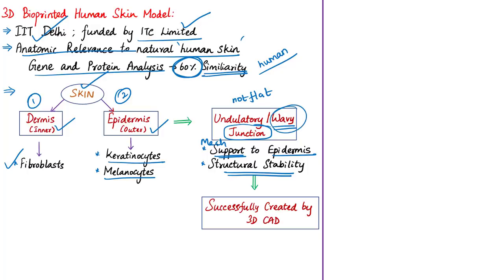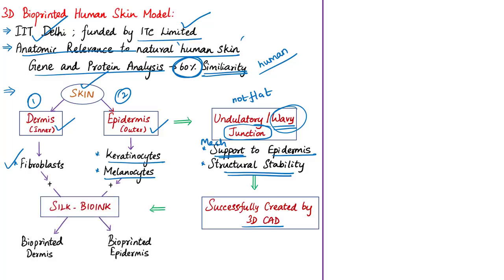The undulatory junction was designed using 3D CAD, and 10 layers of dermis were constructed through bioprinting followed by 8 layers of epidermis. Silk bioink was mixed with the respective cells for growing dermis and epidermis. The bioprinted skin retained its original dimension without any shrinkage for up to 3 weeks. Traditionally, collagen used for developing skin constructs starts shrinking within a few weeks, meaning testing on such collagen skin constructs cannot be carried out beyond one week.